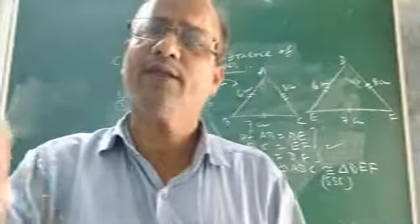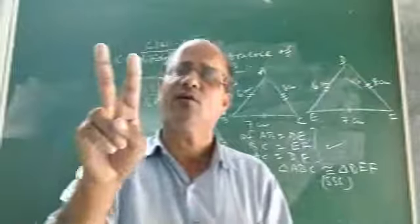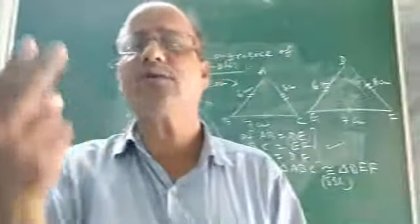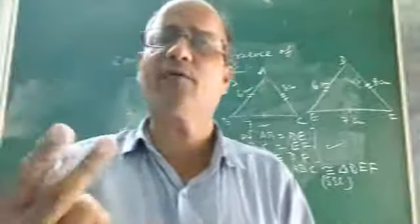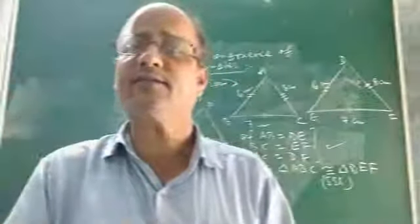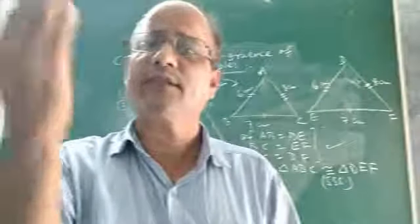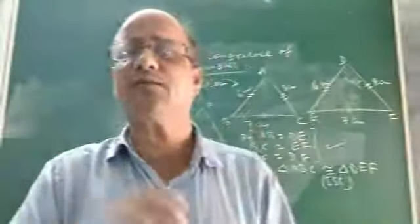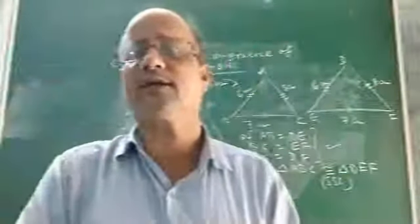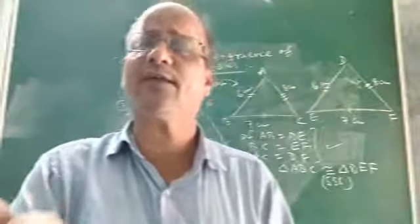If you recall what we had discussed earlier, I had said that two triangles will be congruent under what condition? Two triangles will be congruent if they have the same shape and same size. The three pairs of corresponding sides must be equal, and the three pairs of corresponding angles of the two triangles must be equal. Then only we say that the two triangles are congruent.